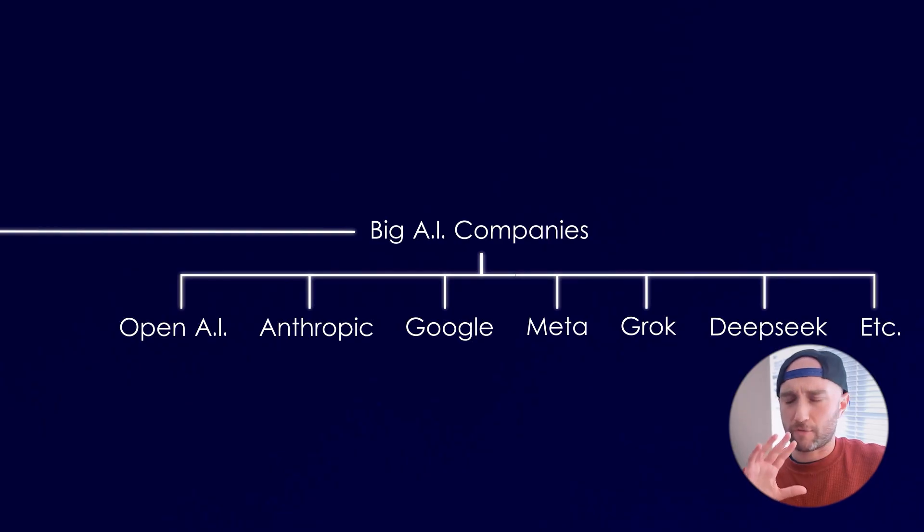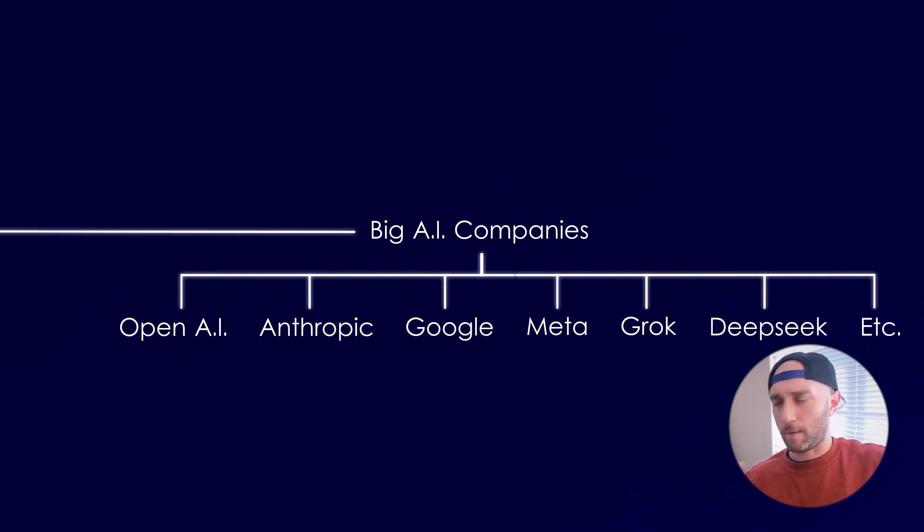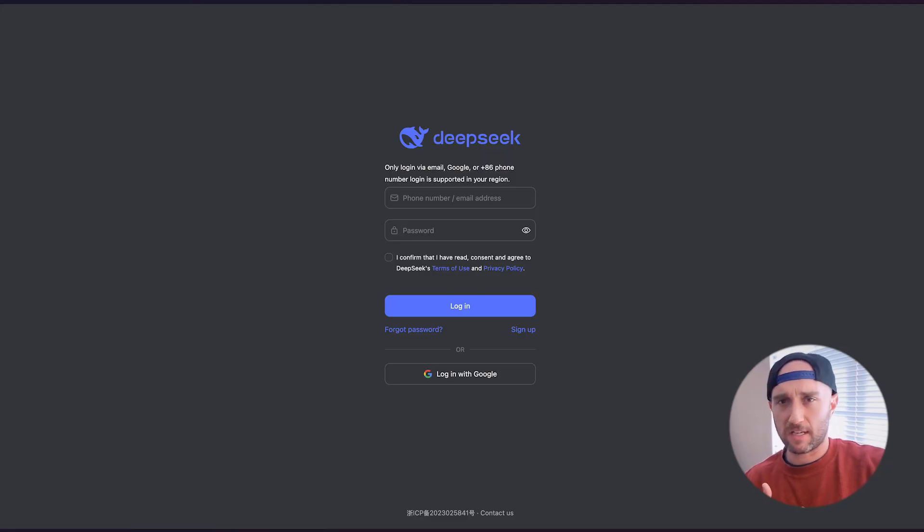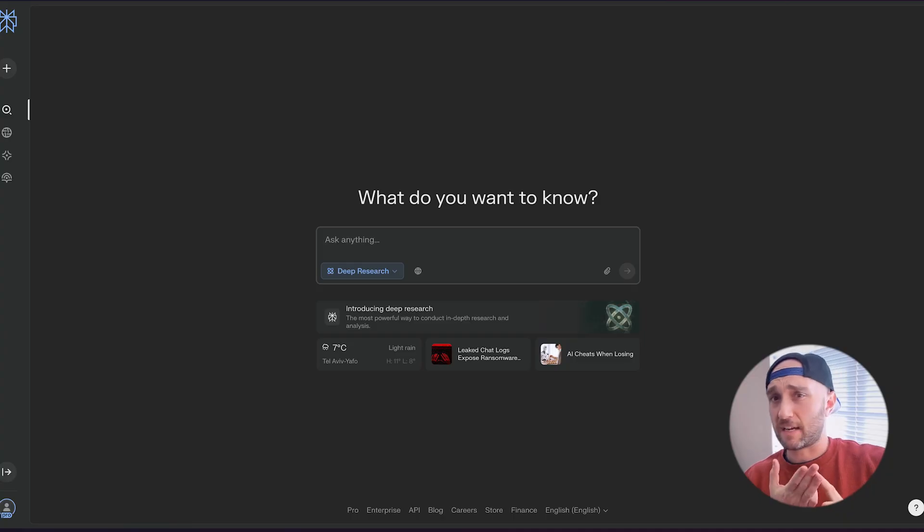Another big company is Meta, or Facebook. They took a whole different approach — they open-sourced it and released Llama, which is an open-source model. Unlike the other models mentioned, Llama's code and weights are open and free for everyone to use and replicate. There are also tons of other notable competitors like Mistral, DeepSeek, and Perplexity, and I'll talk about them in other videos.